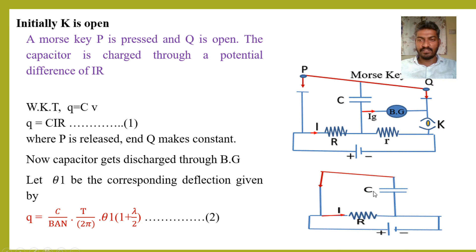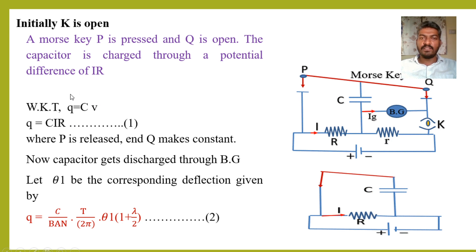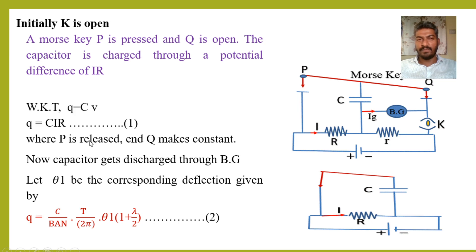Initially, K is open, Morse key P is pressed, and Q is open — the capacitor is charged to a potential difference of V. Reducing this to an equivalent circuit, there are two components: capital R and C, which are parallel to each other and parallel to the battery of EMF V. Since this resistor R is parallel to the battery, EMF V equals I into R. From the definition of capacitance, Q equals CV.